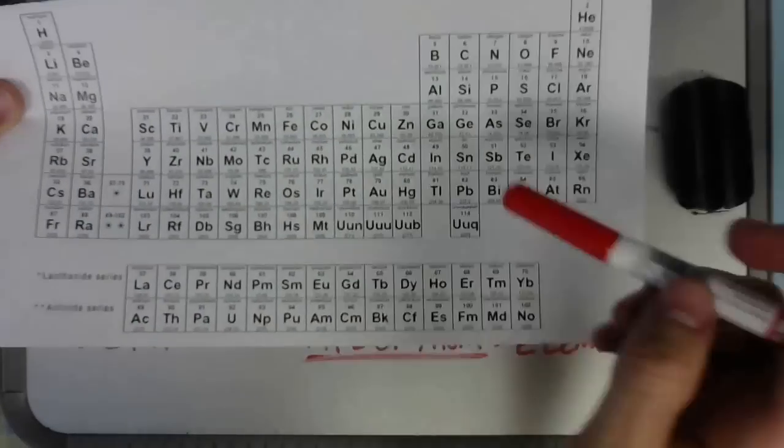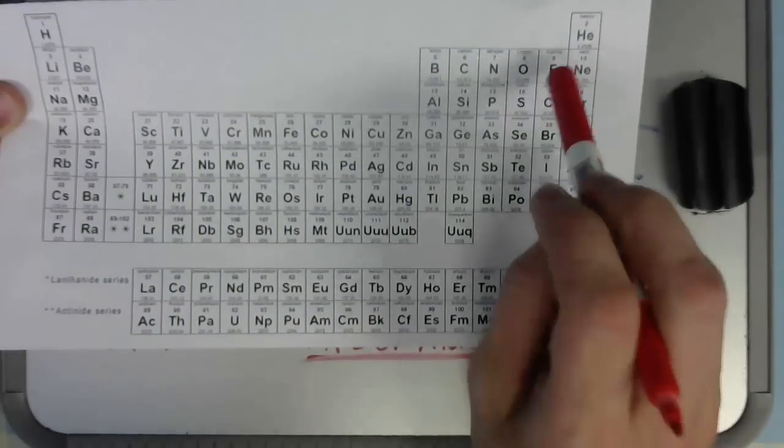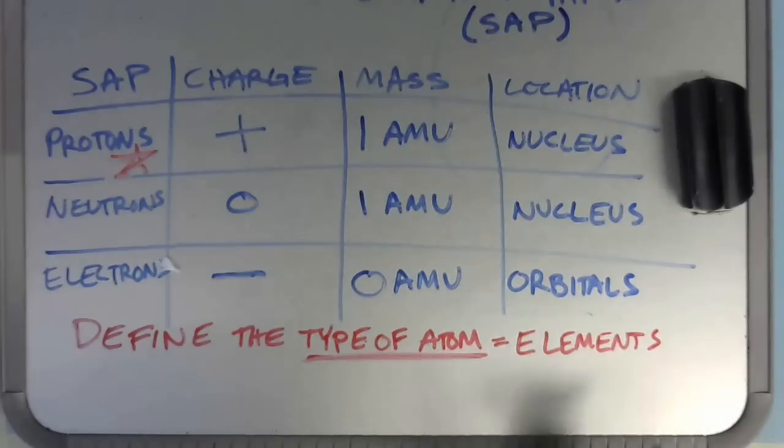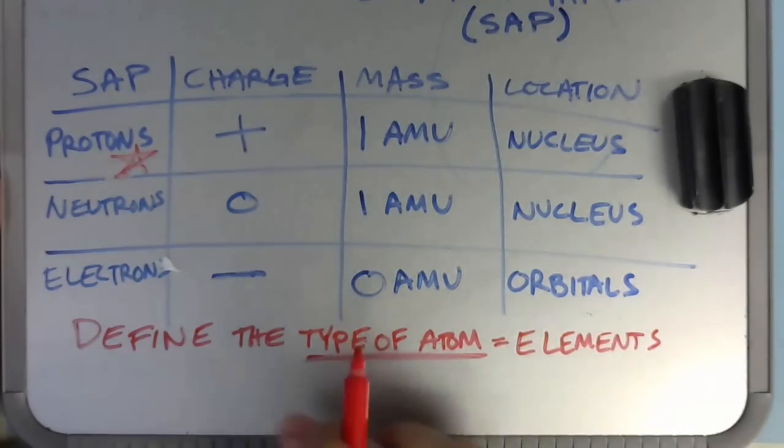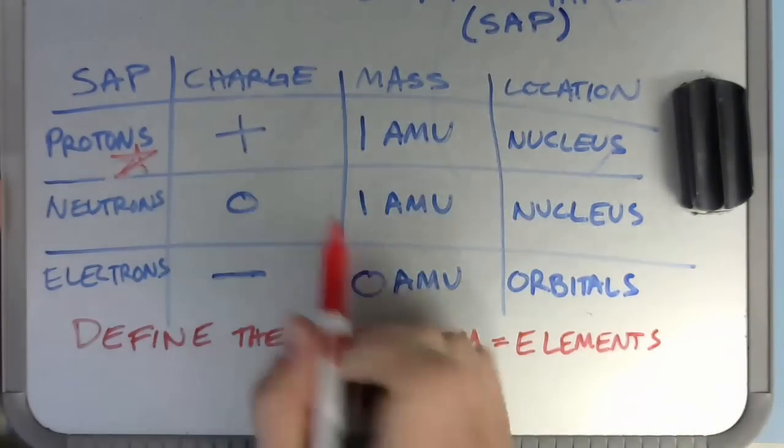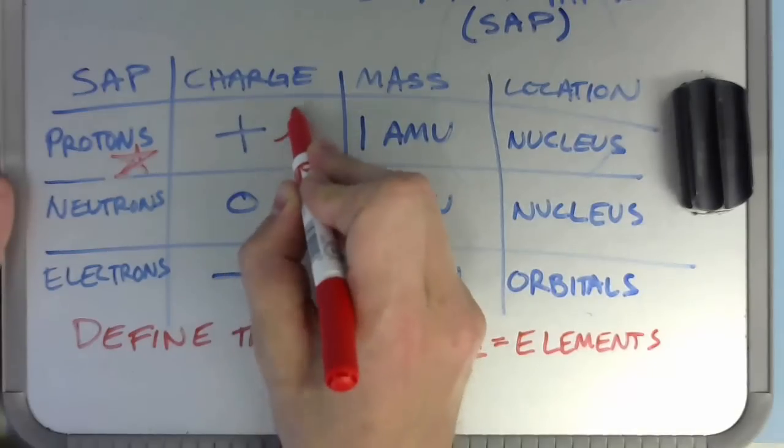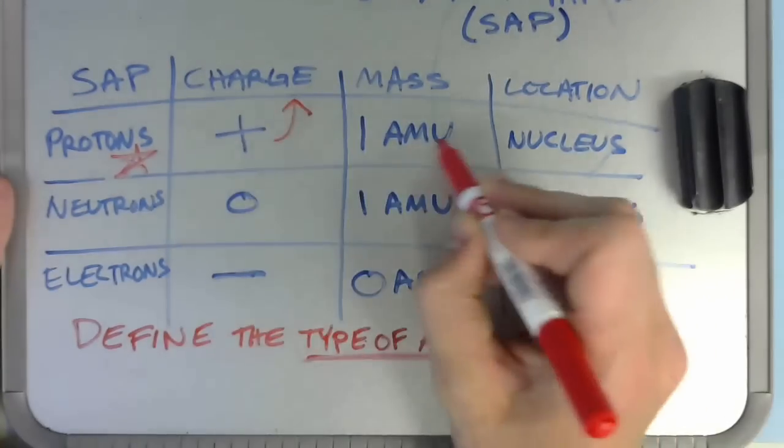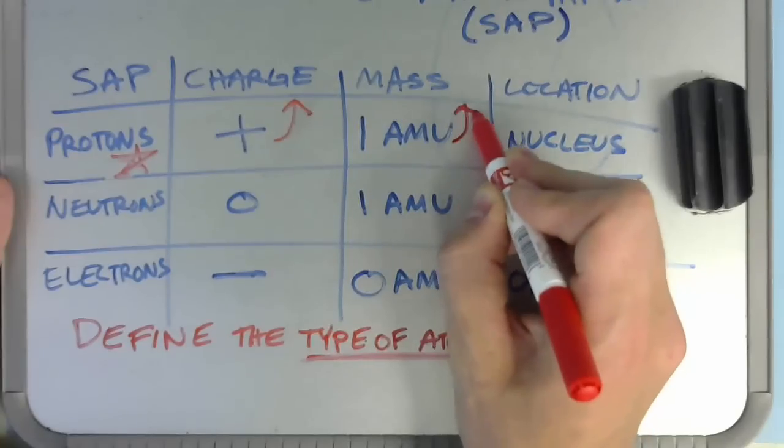Protons define the type of atom, and types of atoms are called elements. So our periodic table of elements, all of these elements have different numbers of protons. Protons are also going to contribute to the charge of an atom, and to the mass of an atom.